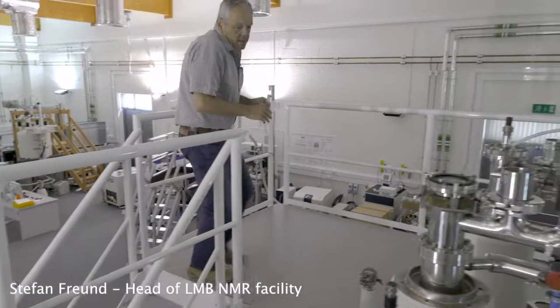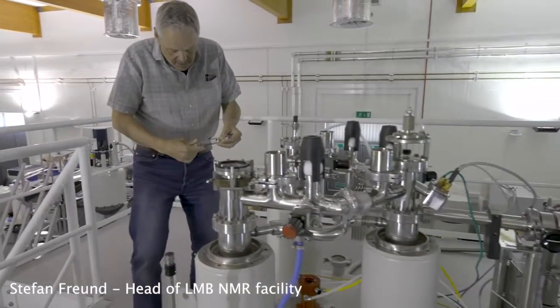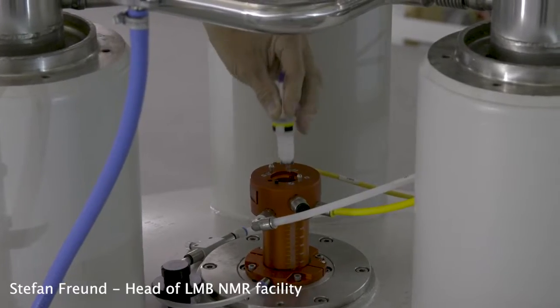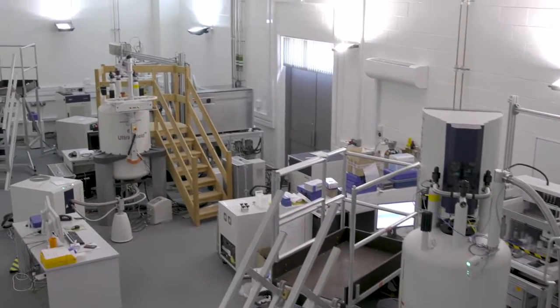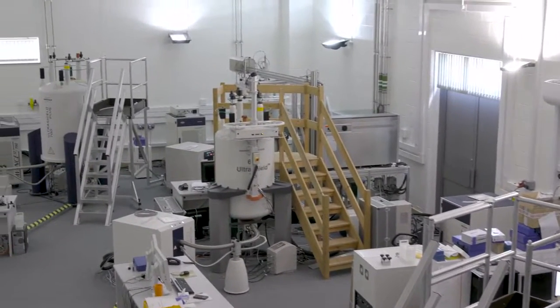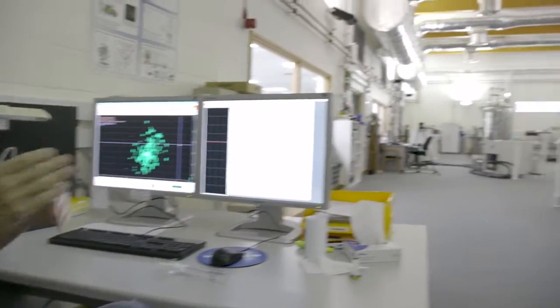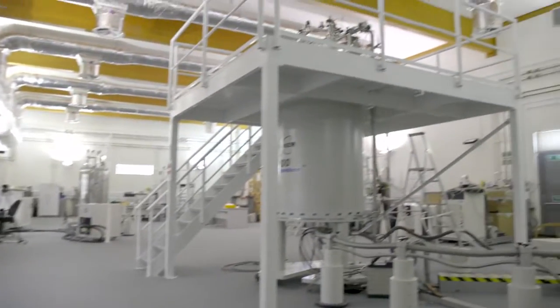NMR spectroscopy in general, I think what you need is a very big magnet. We have multiple big magnets. On an international scale, it's actually a very large facility. To have a system like the 800 MHz spectrometer is actually quite an advantage to be able to use that.